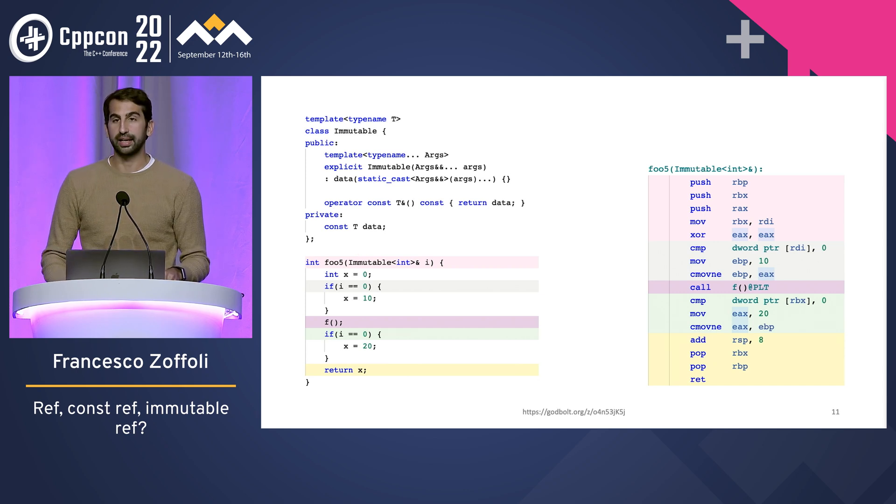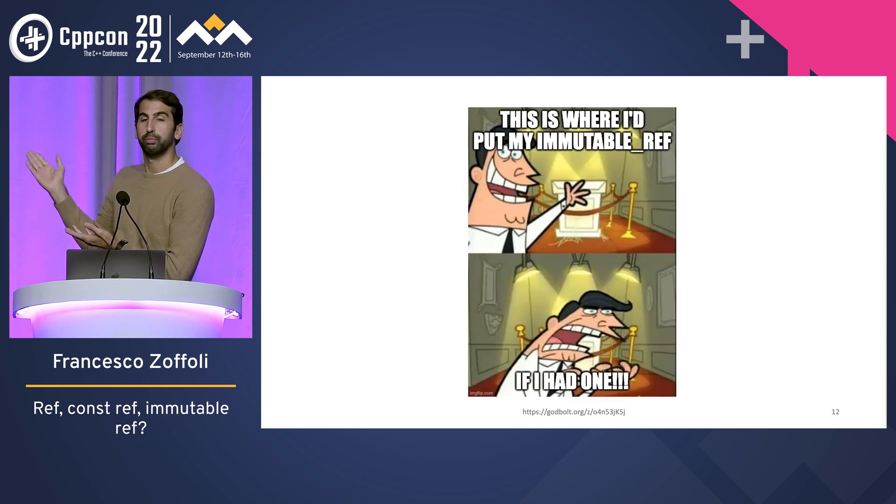So what we will need instead is an immutable ref. If you want to find out more about why you would need an immutable ref and when you would use it, join me in my talk on Thursday about how to use dependency injection to write testable software. Thank you.